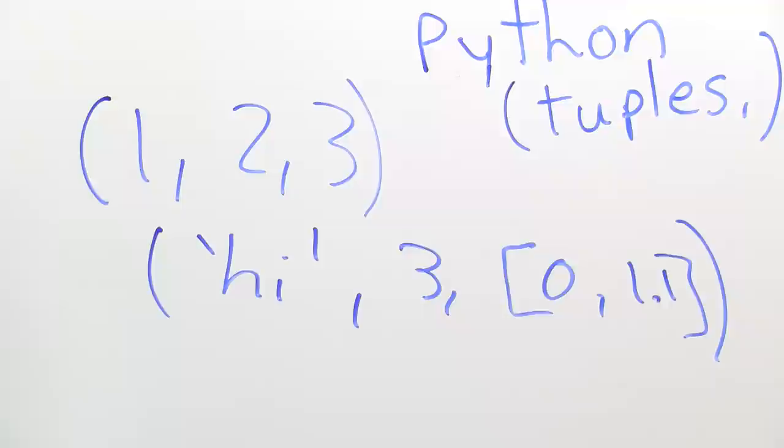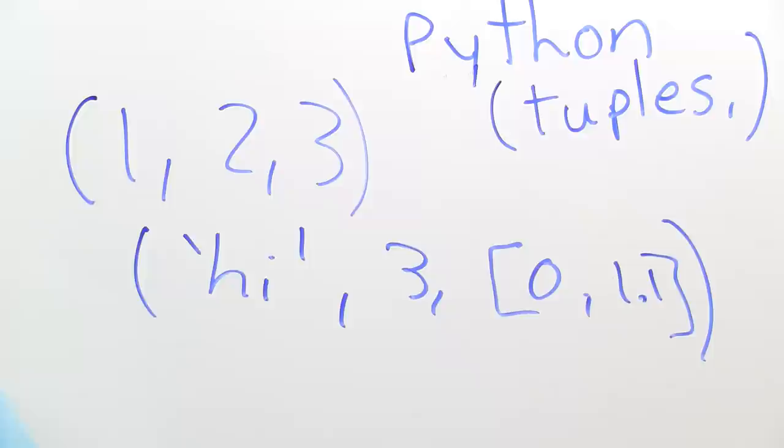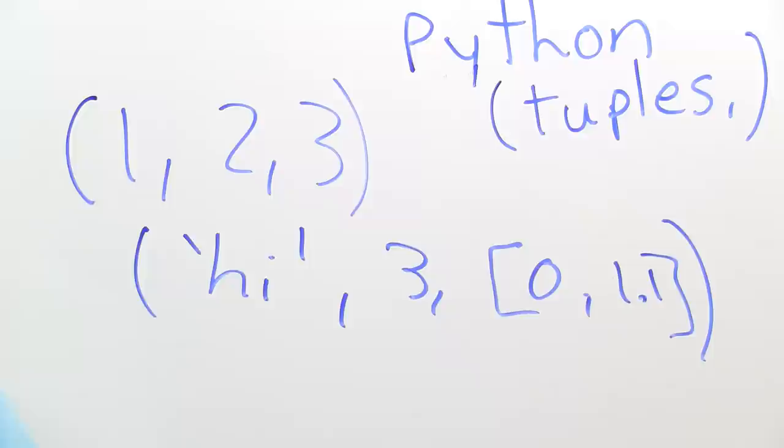This is another tuple with three elements. The first element is a string, the second element is a number, and the third element is a list of numbers. Now, once this tuple is created, to reemphasize, it cannot be modified.